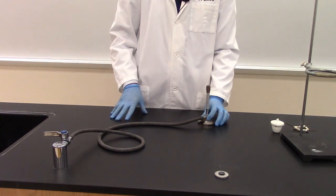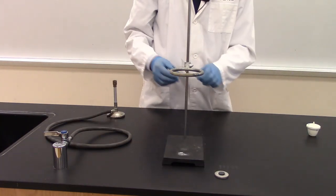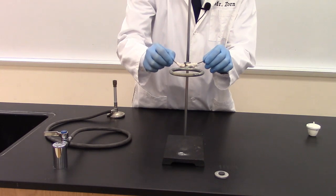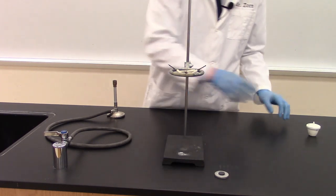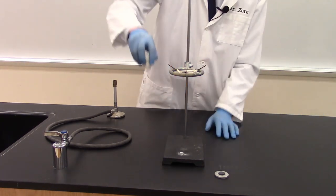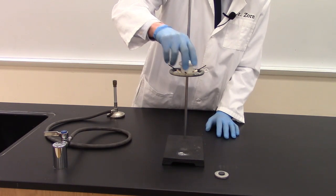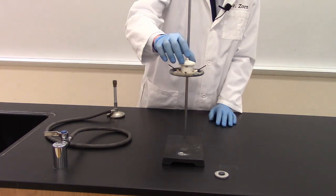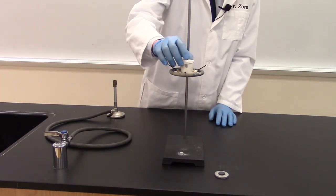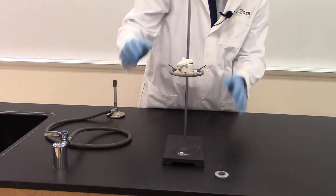Alright, we are good to go. My next step is to take our clay triangle here and we're going to place this on top of the ring. This is going to give us an area to place our crucible like that and then we're going to tilt the lid slightly so any gas can escape during the lab.